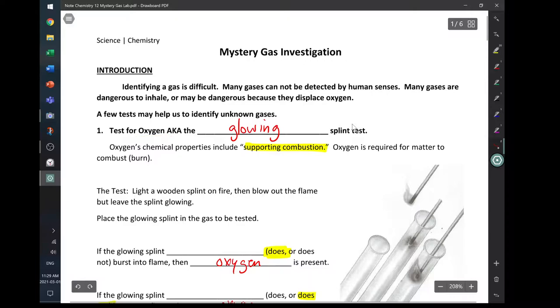So the first one is this test for oxygen and it's also known as the glowing splint test. Oxygen's chemical properties include supporting combustion. Oxygen is the second most reactive element in our universe but at this point is really important because it supports combustion. It supports burning. And that's really what we're going to look at. We're going to look at whether something burns and if it does then we're going to assume that oxygen is present.